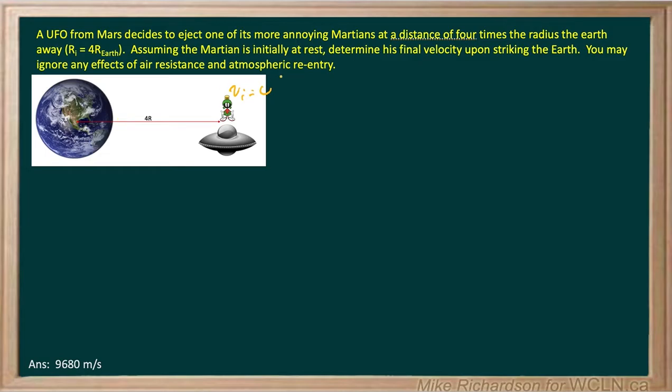Now we can't use kinematics simply because in kinematics we need to have a constant acceleration. And we know that the acceleration gets bigger and bigger as you get closer and closer to the Earth. Right on the surface of the Earth, his acceleration will be 9.8 meters per second squared. And somewhere way out here at 4r, it'll be substantially smaller.